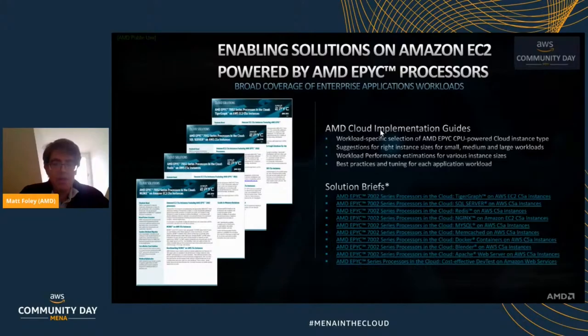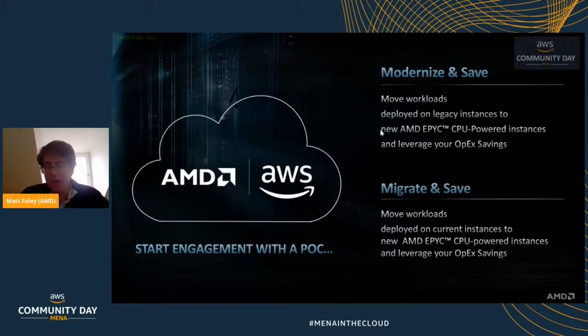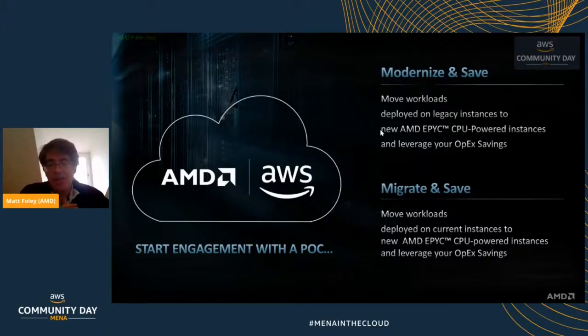There are solution briefs and an implementation guide available on our website covering the different types of workloads characterized on the EPYC-based instances. The easiest thing here — and the nice part — is how easy it is to do a proof of concept in AWS. Outside of the cloud, getting a customer to test a system involves working with partners, shipping systems, arranging logistics. In the cloud, the service is there, available to use, easy to spin up, and in exactly the same structure you're already used to.